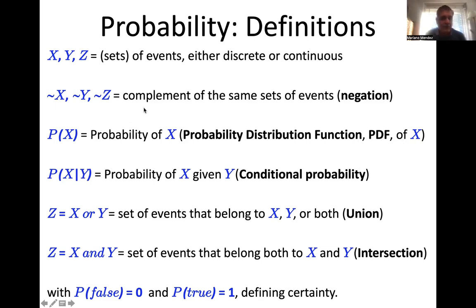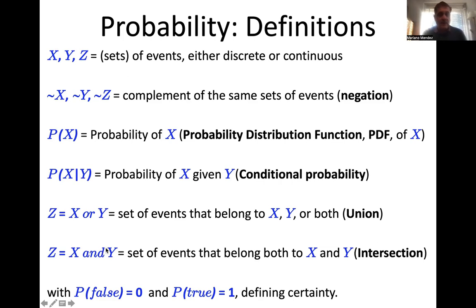We have conditional probabilities. What is the probability of X given Y? For example, what is the probability of drawing an ace from a deck if I already got an ace before? It's different than if I didn't get an ace before. Then we have the OR relation: what is the probability of getting X or Y? And the AND relation: what is the probability of getting X and Y? Something is false if it has a probability of zero, and true if it has a probability of one, or 100%.